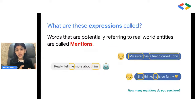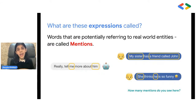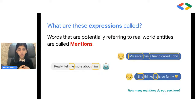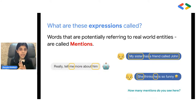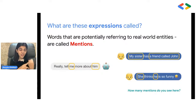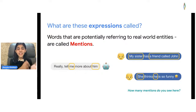Expressions that refer to real-world entities in this domain are known as mentions, and finding them is the first task in coreference resolution. In this example, there are four real-world entities: the user, the bot, the user's sister, and the user's sister's friend John. In total, there are six mentions of these entities, all highlighted.